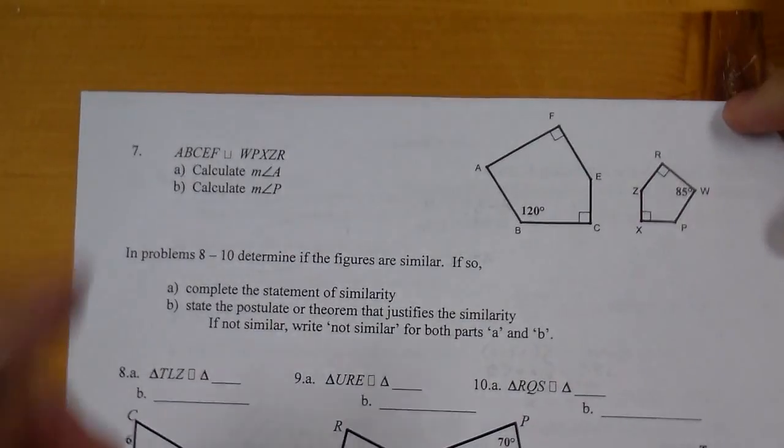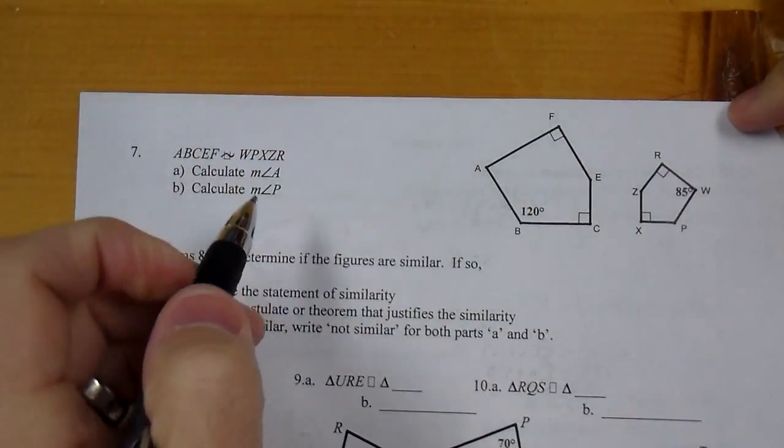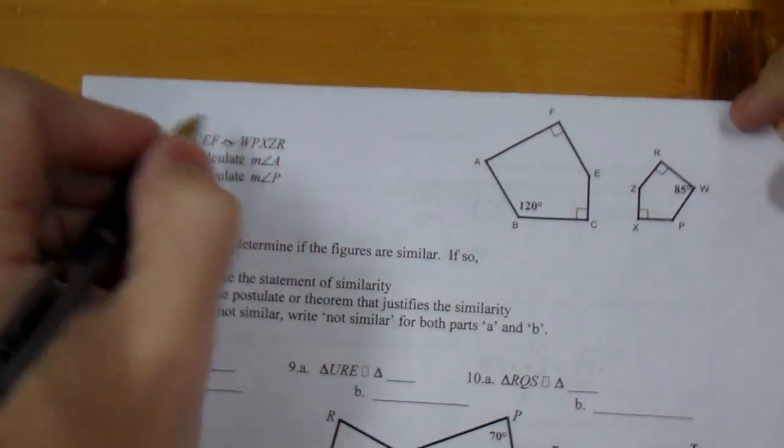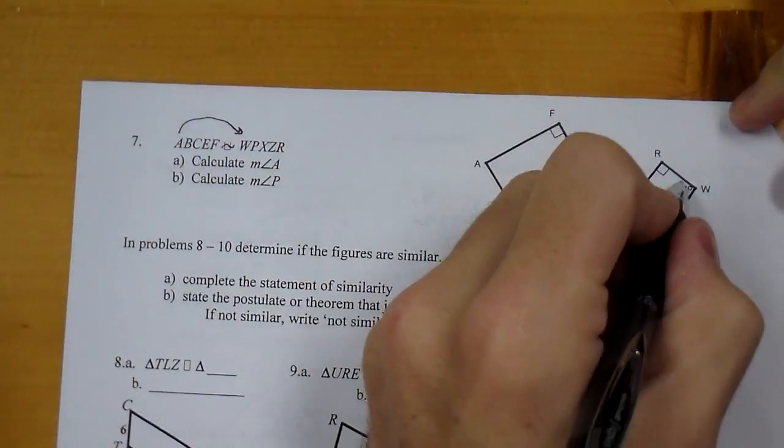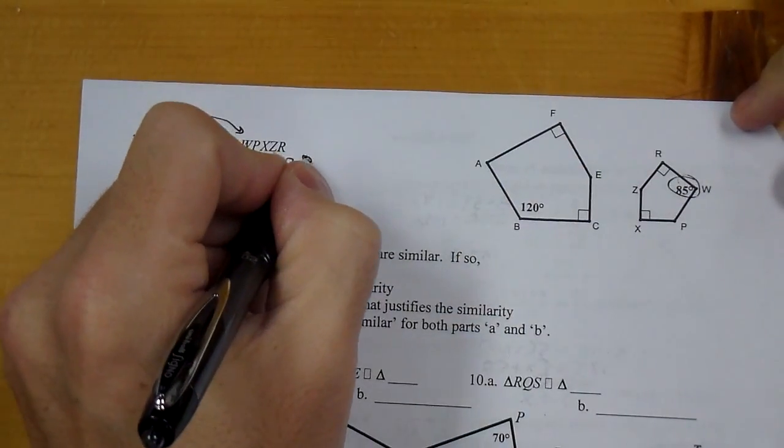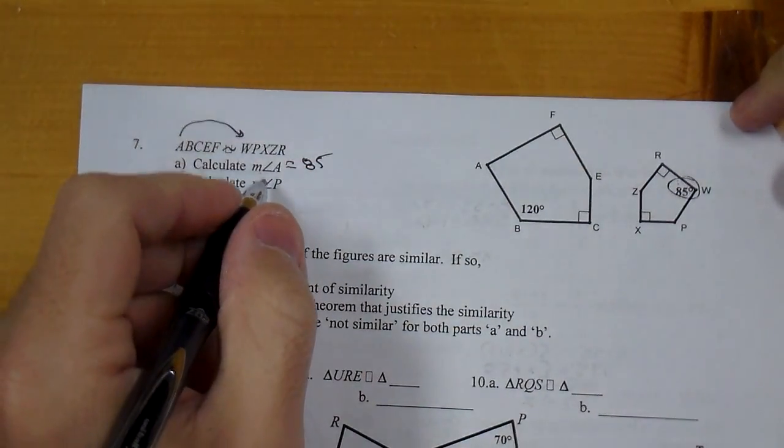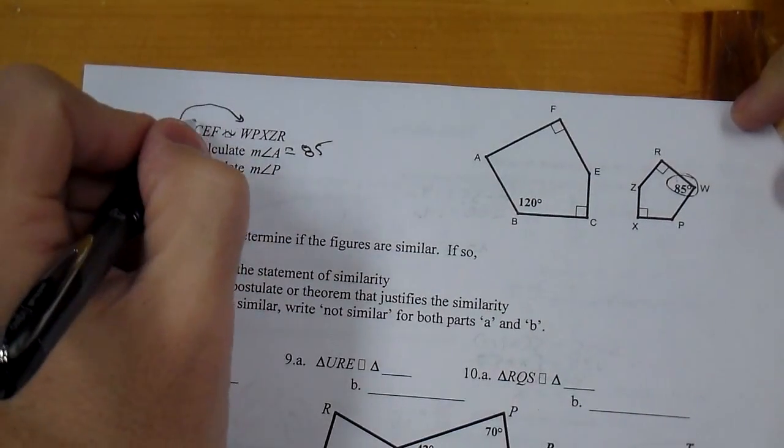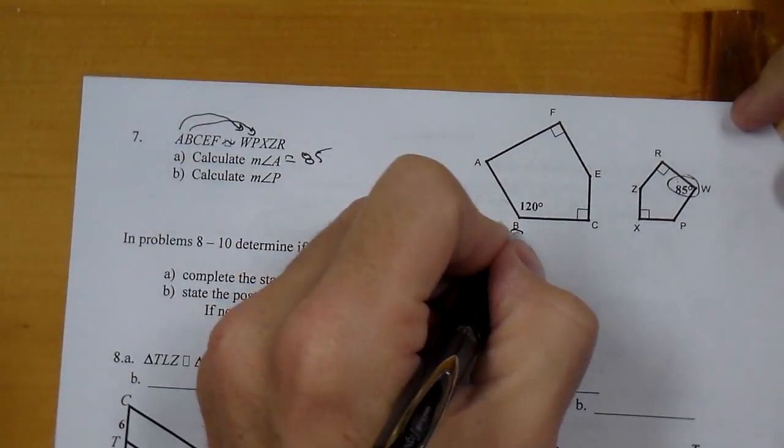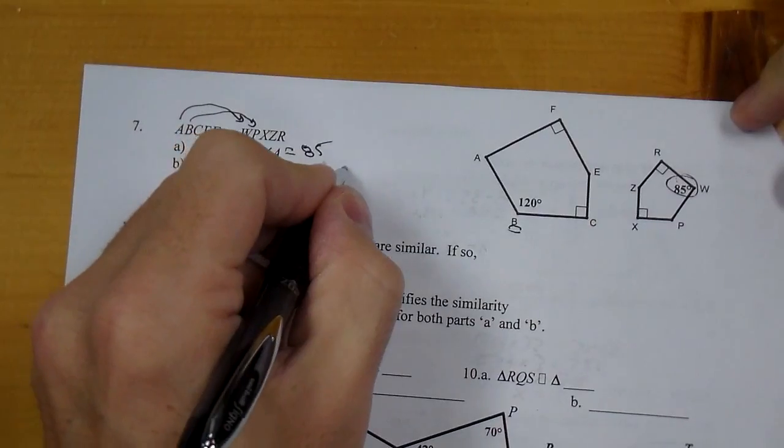Number 7, we have they are similar. We're going to calculate angle A. A is corresponding to W, so that is 85. Angle P is corresponding to the second letter, so that would be B, that's 120 degrees.